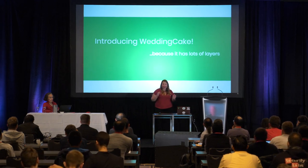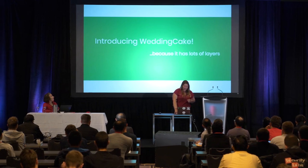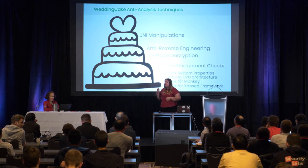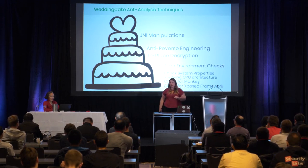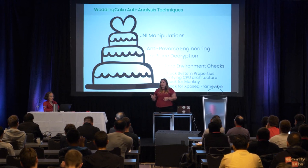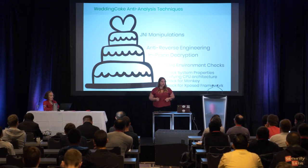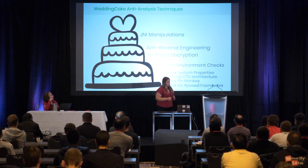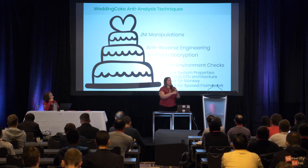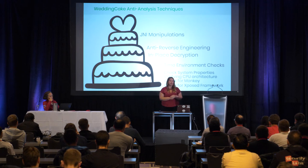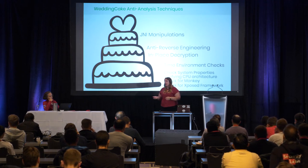Introducing Wedding Cake — because it's got lots of layers — and that's what we're going to be going through and talking about the different anti-analysis techniques they have. All the different techniques that Wedding Cake embedded in this native library include: Java Native Interface manipulations, changing from the specific expected way that JNI works; anti-reverse engineering techniques; in-place decryption of the ELF; and finally, 45 different runtime environment checks that include checking system properties, verifying CPU architecture, looking for monkey (a tap emulation software), and looking for the Xposed framework (a hooking software).